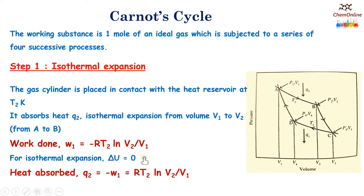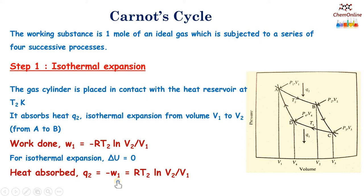During an isothermal process the temperature is constant, meaning there is no change in internal energy: delta U equals 0. According to the first law of thermodynamics, delta U equals Q plus W, so when delta U equals 0, Q equals minus W. Therefore the heat absorbed Q2 equals minus W1, which equals RT2 log(V2/V1). So we have W1 equals minus RT2 log(V2/V1) and Q2 equals RT2 log(V2/V1). This is the first step.